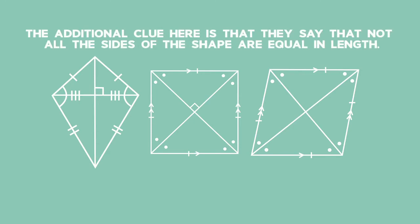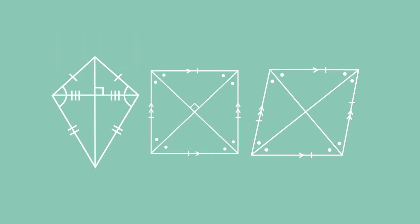The additional clue here is that they say that not all the sides of the shape are equal in length. Now remember that a rhombus and a square are special types of parallelogram, and in both the rhombus and the square, your adjacent sides are equal to each other, which means all sides in the shape are equal to each other.